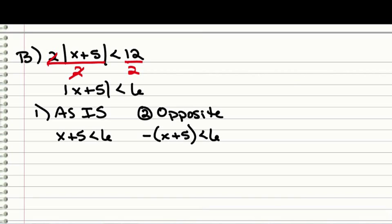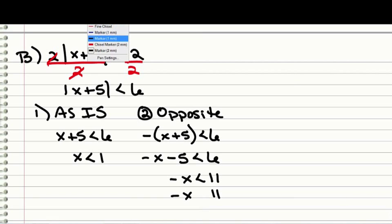So those would be our 2, so let's work the as is. Subtracting 5 from both sides, we get x less than 1. Let's go ahead and distribute the negative 1 to get negative x minus 5, less than 6. Add 5 to both sides, and we get negative x less than 11. And again, if you divide both sides by that negative 1, you have to switch the inequality to greater than.